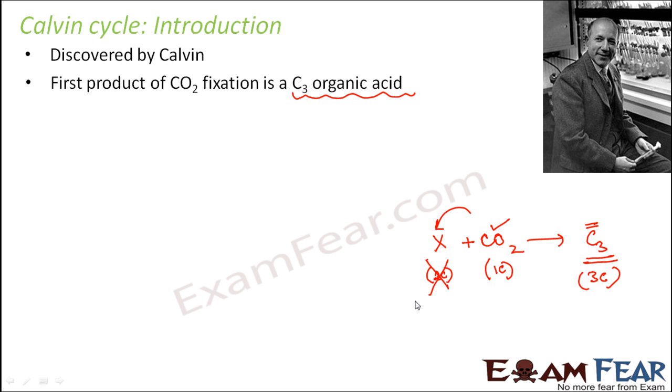With a lot of experiments scientists got to know that the primary acceptor of CO2 was a compound known as RUBP, that is ribulose biphosphate, and it is a 5-carbon compound. That was quite a surprising fact but it was experimentally proved and determined.